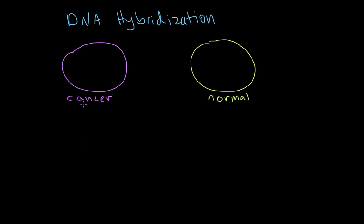The reason cell growth is unregulated is because there are various mutations that cause changes in the proteins that are expressed and changes in the regulation of the cell cycle. There are hundreds of different mutations and hundreds of different proteins that could be affected, and all of them can lead to cancer.